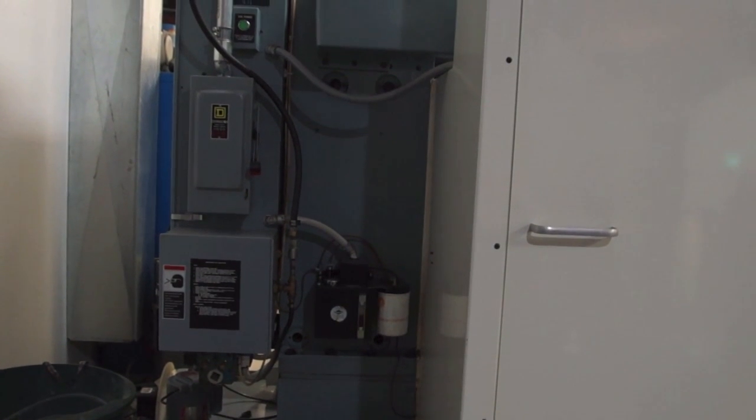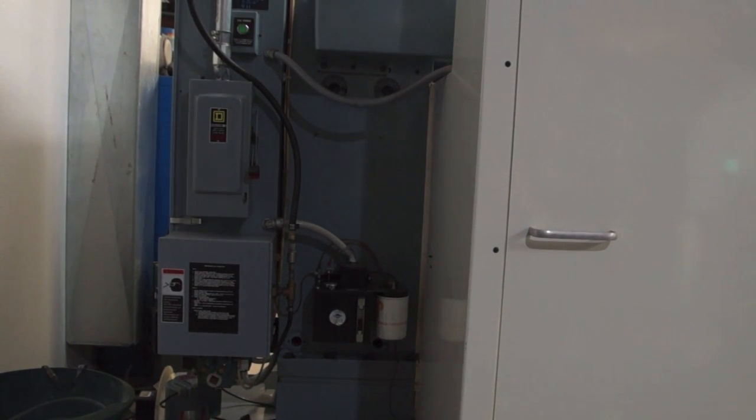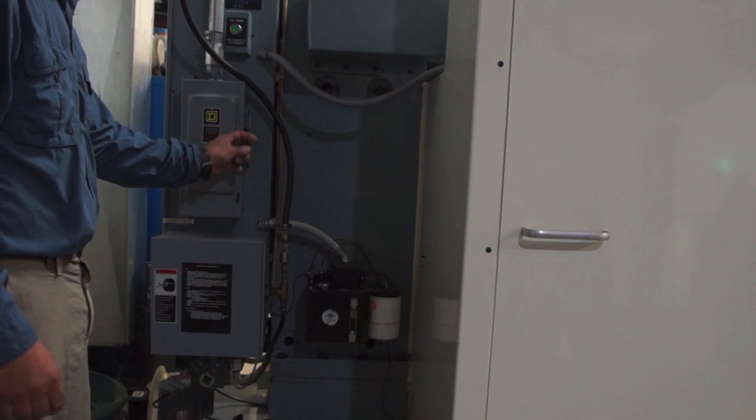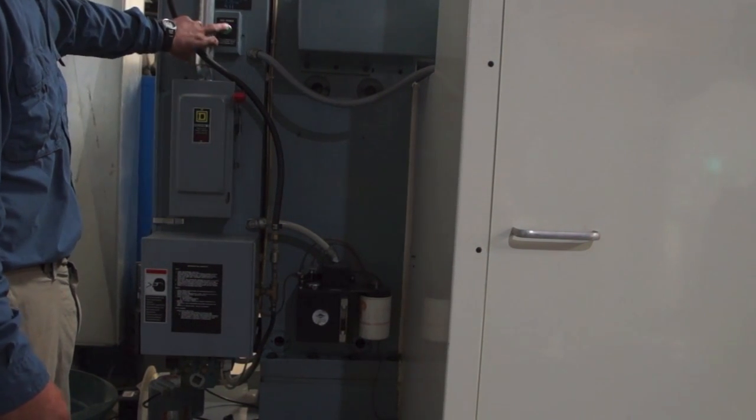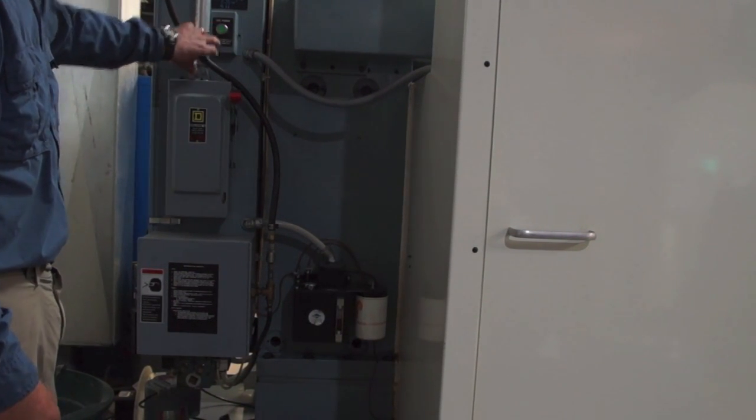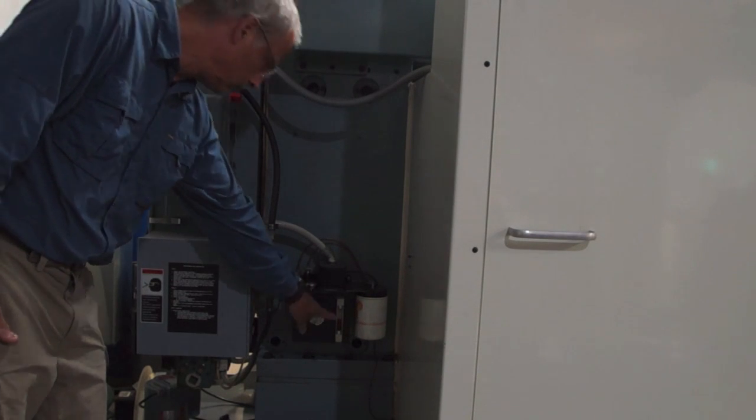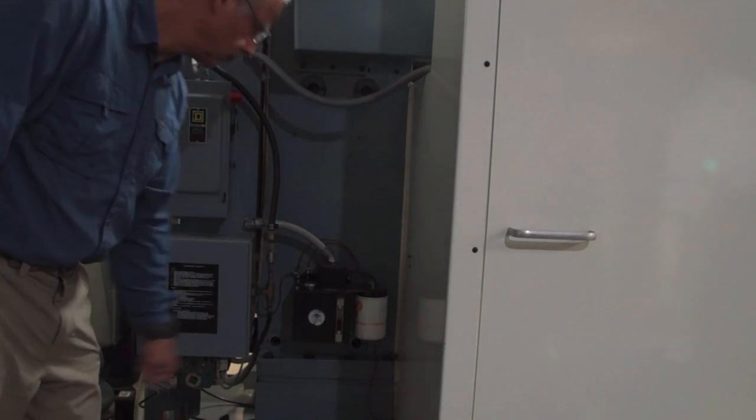To start the VMC20 first thing in the morning, come to the back of the machine and flip up the main breaker with the red handle. Push the green button which turns on the computer. Always check that you have at least a half full visual on the way loop.